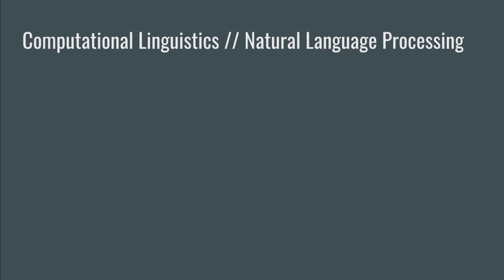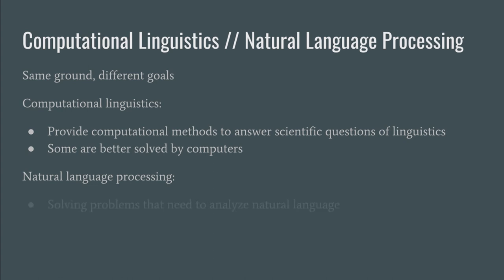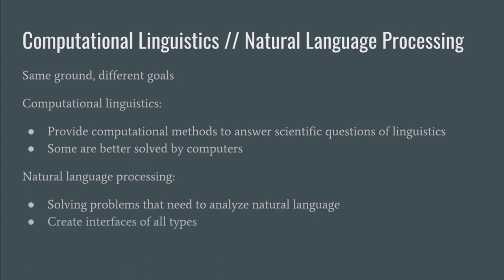If you would like to point out that computational linguistics, CL, and NLP, natural language processing, are two different fields, I would say that they are highly related — working on the same ground but with different goals in mind. Computational linguistics focuses on providing and creating computational methods to answer certain scientific questions of linguistics, which can be better solved by using computers, partially or fully. On the other hand, natural language processing can be considered as the art of solving problems that need to analyze natural language. It is used heavily to create interfaces of all types so that we, as humans, can better communicate with computers. There's a strong overlap between the two, and hence I'll be talking about both fields in depth in this podcast while using the terms interchangeably.